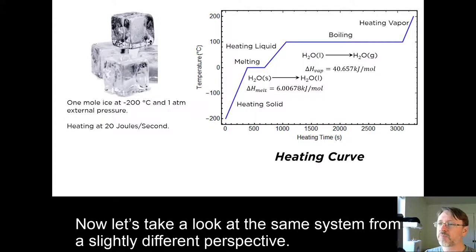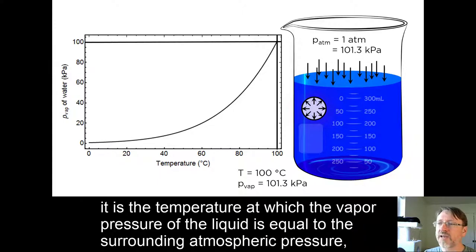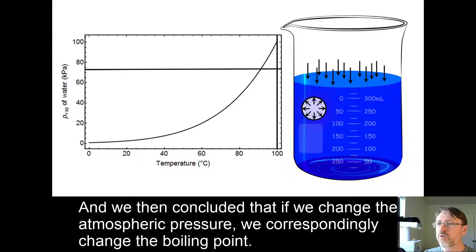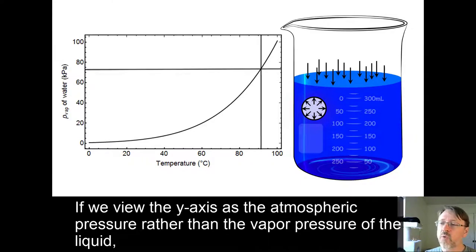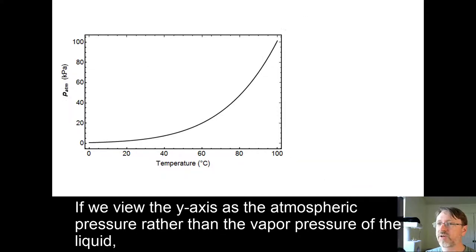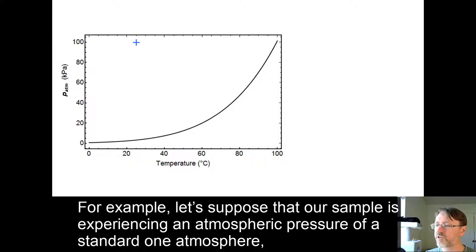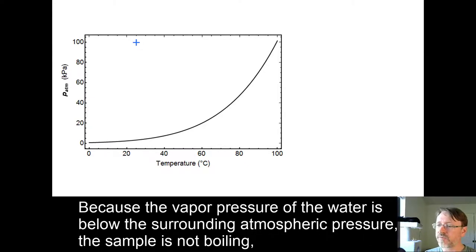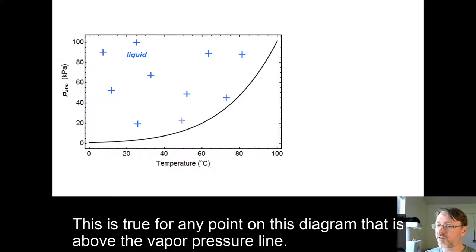Now let's take a look at the same system from a slightly different perspective. Recall what we said a couple of videos back about boiling point. It is the temperature at which the vapor pressure of the liquid is equal to the surrounding atmospheric pressure, allowing the bubbles that form upon boiling to be self-supporting. And we then concluded that if we change the atmospheric pressure, we correspondingly change the boiling point. That suggests that we can look at this vapor pressure diagram in a different way. If we view the y-axis as the atmospheric pressure rather than as the vapor pressure of the liquid, then the graph tells us what state or states the system is in. For example, let's suppose our sample is experiencing an atmospheric pressure of a standard 1 atmosphere, and the temperature of the sample is 25 degrees C. Because the vapor pressure of the water is below the surrounding atmospheric pressure, the sample is not boiling, and so is primarily a liquid, other than the humidity caused by the vapor pressure. This is true for any point in this diagram that is above the vapor pressure line.